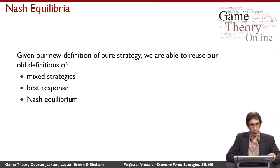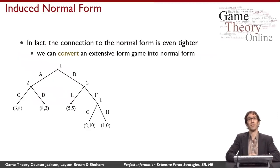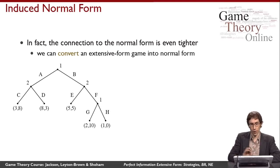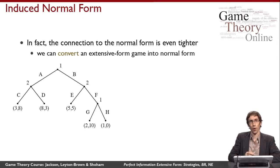We might wonder whether Nash equilibria exist and how to reason about them. There's an even tighter connection to the normal form: we can convert an extensive form game into a normal form game. This is useful because we can leverage results about normal form games — like the existence of equilibrium — and if we find it easier to reason about the normal form, we can actually construct and examine it.